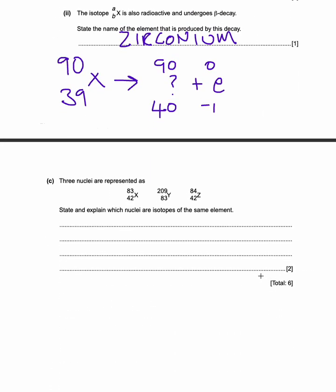And then it says, three nuclei are represented as X, Y, and Z. X has a mass of 83 and a proton number of 42. Y has a mass of 209 and a proton number of 83. And Z has a mass of 84 and a proton number of 42. State and explain which nuclei are isotopes of the same element. So it's two marks. So we need to basically give our answer. That's the state, which are two of the same. And then we need to explain why for the second mark.